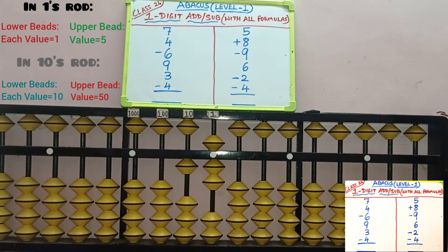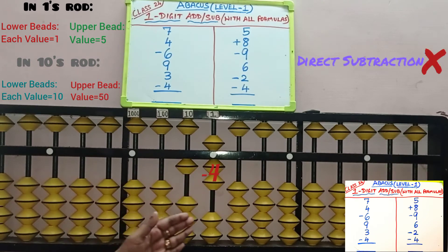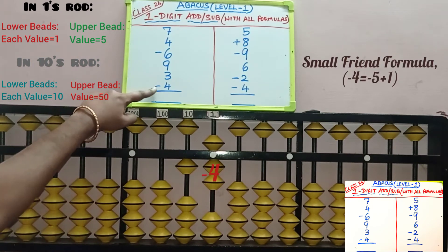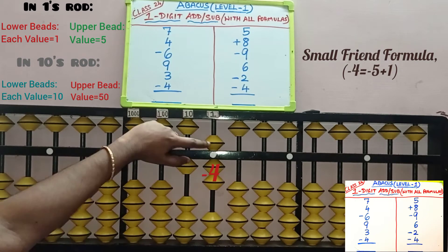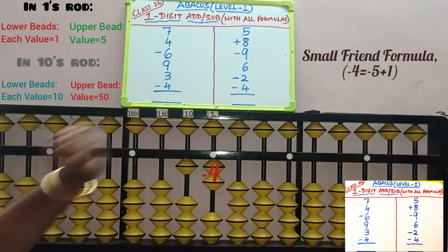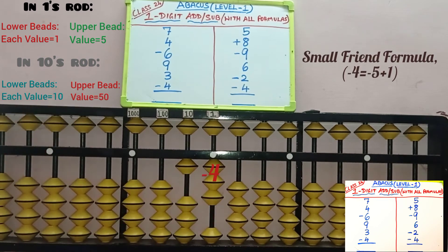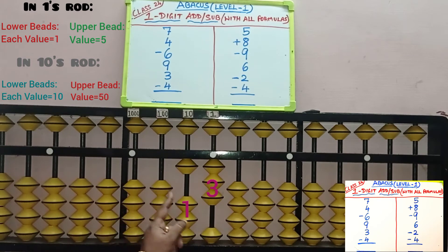Last row, minus 4 — we need to remove 4 beads from the 1 slot. In the lower part, only 2 beads are available. We can't do minus 4 directly. First check small friend — we can do minus 5 in the 1 slot, and 5 beads are available. Minus 5. While removing the small friend, 4's small friend is 1, so add 1 bead. 4 is subtracted with minus 5 plus 1. Sum is completed. Check the answer: in the 10's place, 1 bead; in the 1's place, 3 beads. So 13 is the answer.